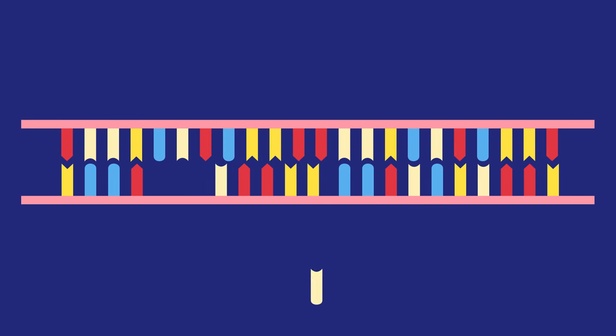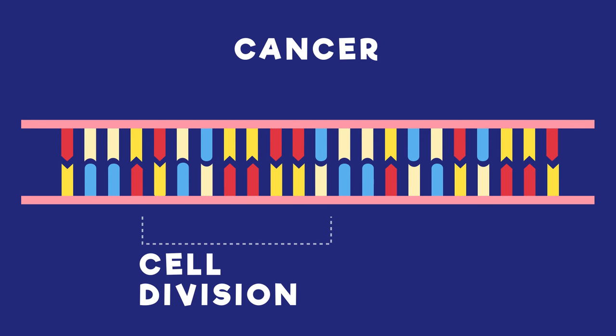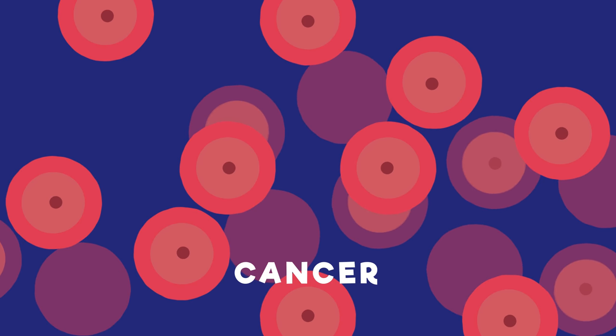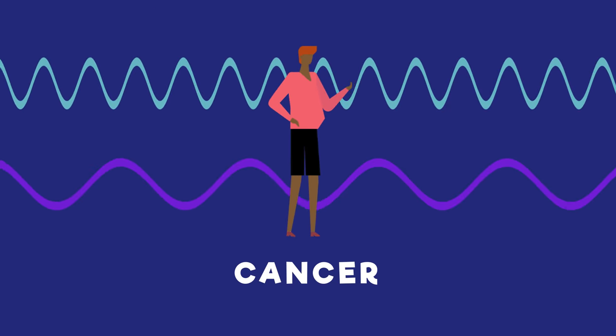If these mutations happen to a region of DNA that controls cell division, cancer can occur. This is because cancer is uncontrollable cell division. Thus, exposure to ionising radiation increases the risk of developing cancer.